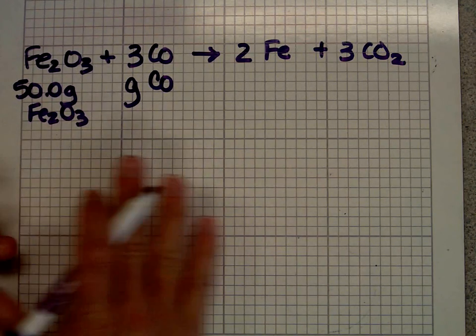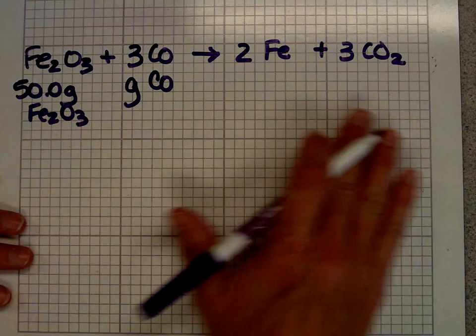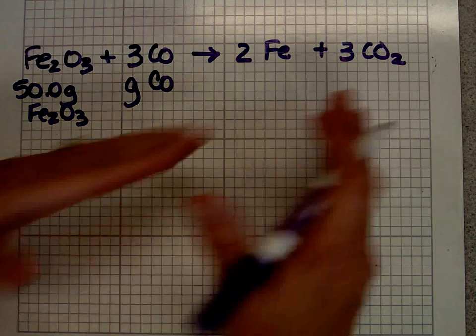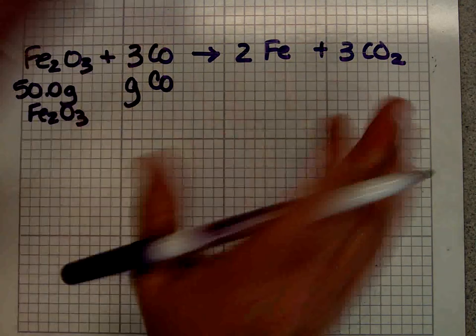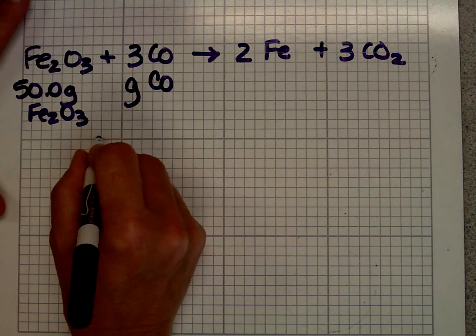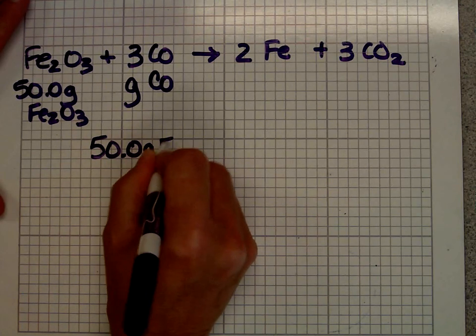These problems are always the same. It doesn't matter what side of the arrow you're looking for. They could be both on the left, both on the right, one on each, go from the right to the left, the left to the right, it doesn't matter. When you do stoichiometry problems, the way that I do them is I always start with what I know.